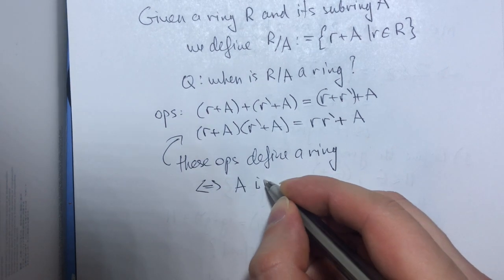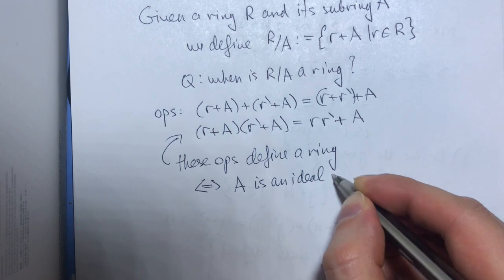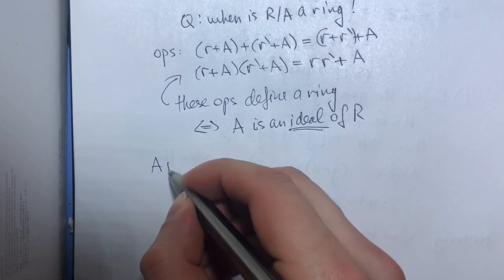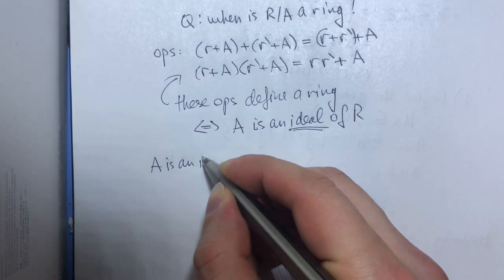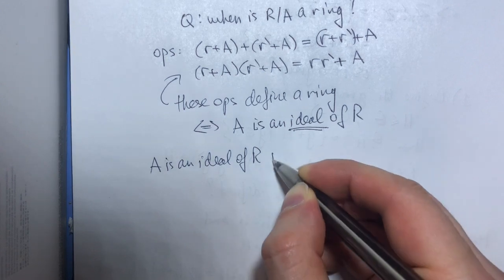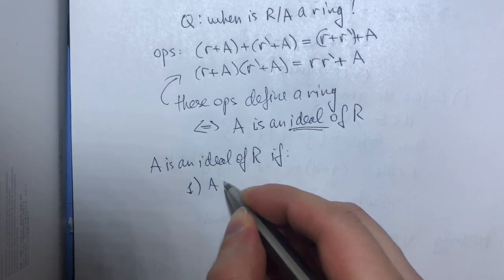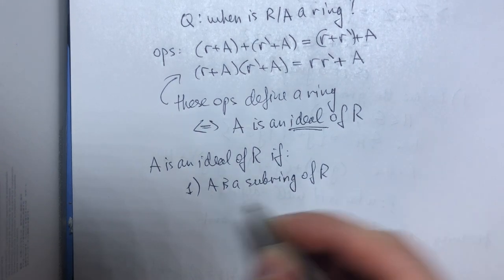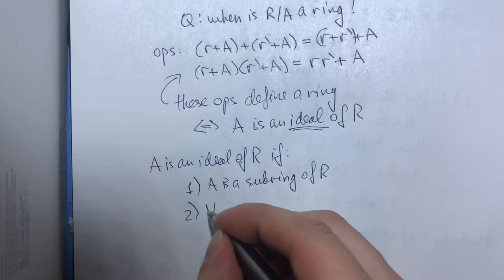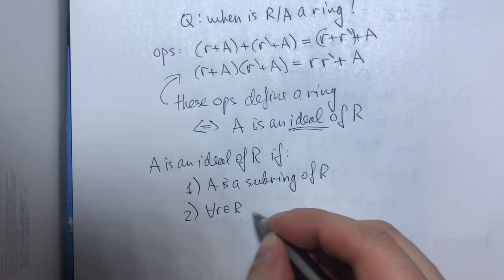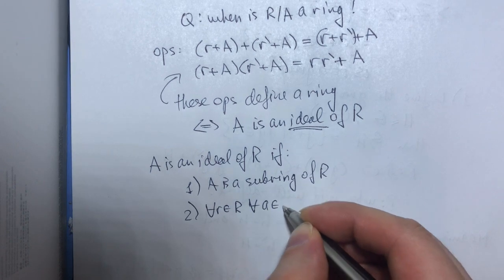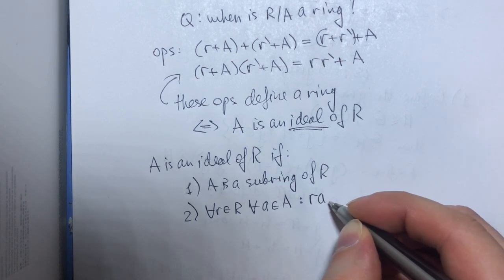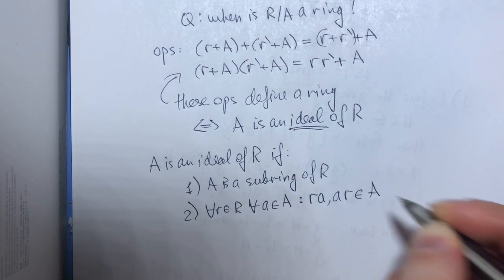So it turns out that these operations define a ring if and only if A is an ideal of R. And the definition is the following: A is an ideal of R if A is a subring of R, and secondly for every r in our ring and for every a in our subring, we must have that rA and Ar are both inside A.